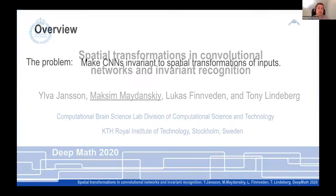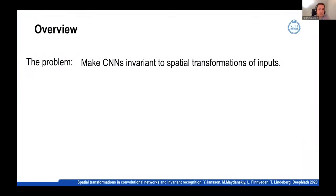So first, let's start with an overview. What is the issue that we are going to be addressing? So the problem is to make convolutional neural nets invariant with respect to spatial transformations of their inputs. I'll go into more details a little bit later about what this means.